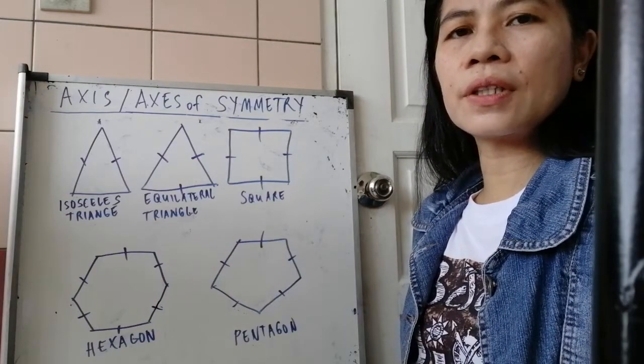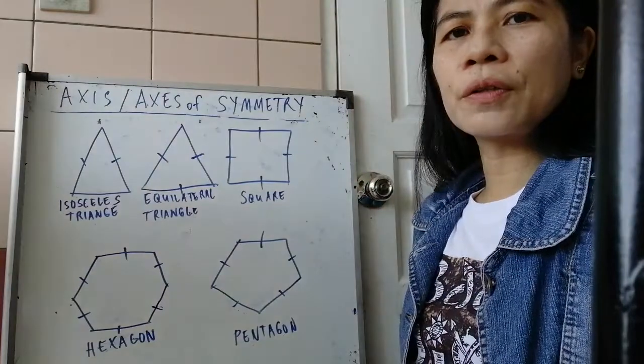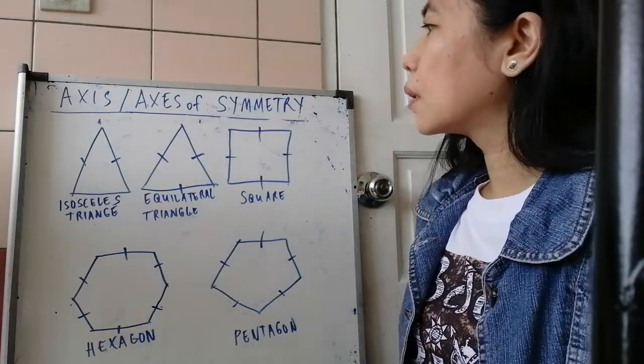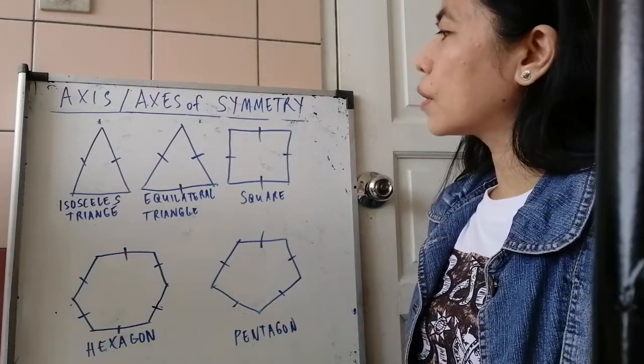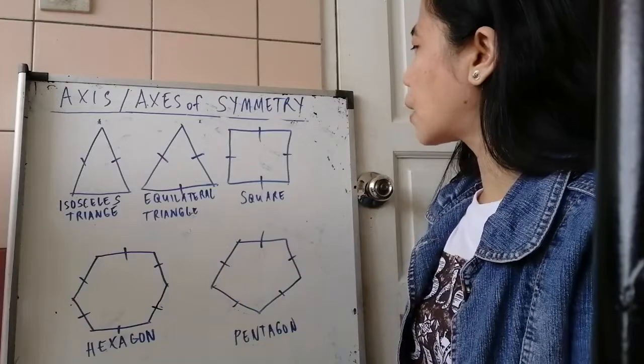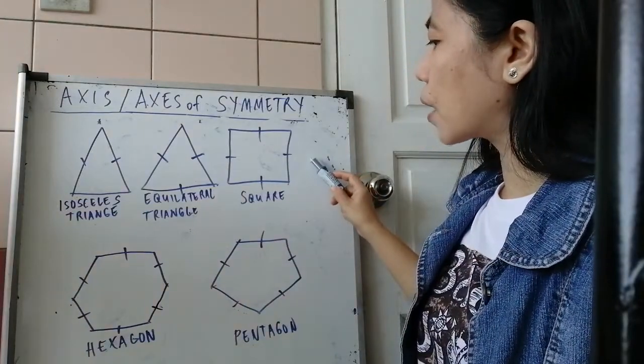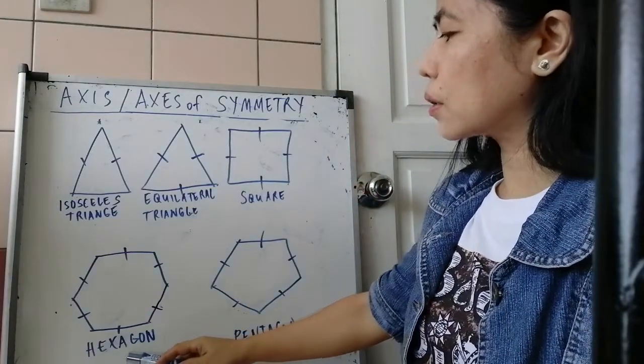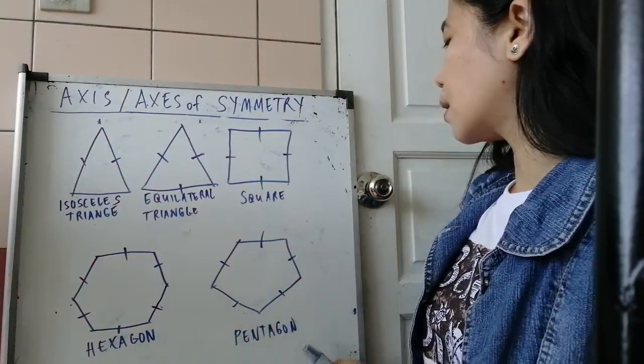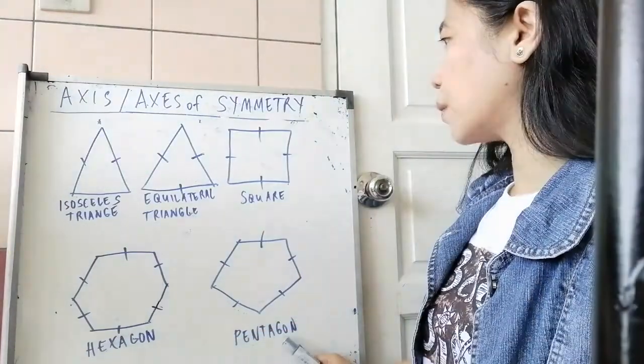Axis is singular, and if it is more than one, it is axes. Okay, so we have here different figures. An isosceles triangle and equilateral triangle. We also have a square, a hexagon or a polygon which has six equal sides, and a pentagon which has five equal sides.